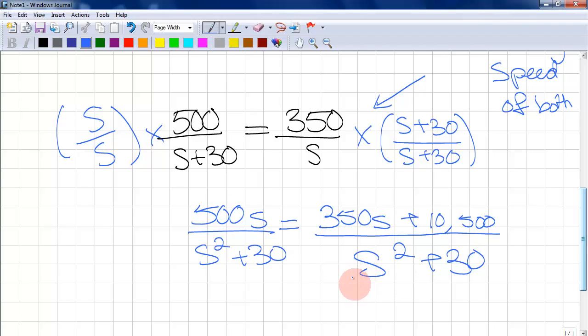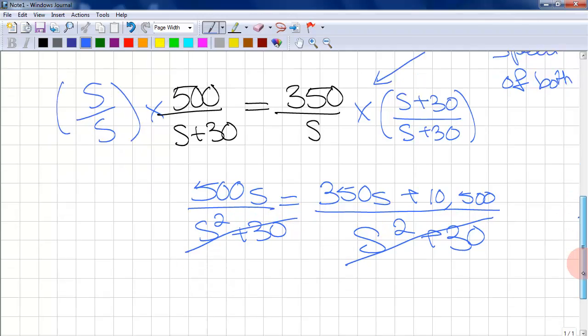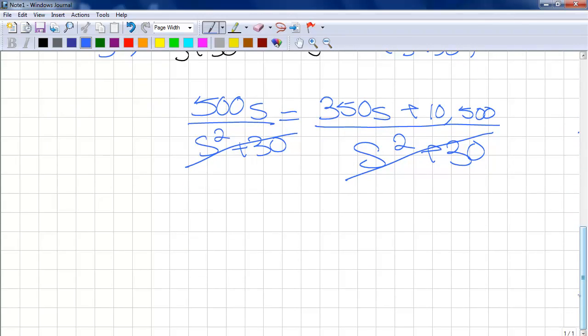Because of the common denominator, they can be crossed out. So, we now have 500S is equal to 350S plus 10,500.